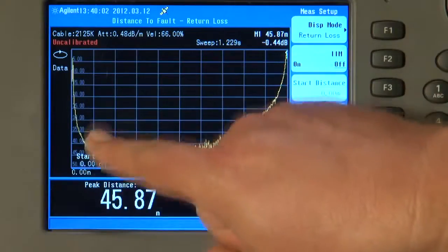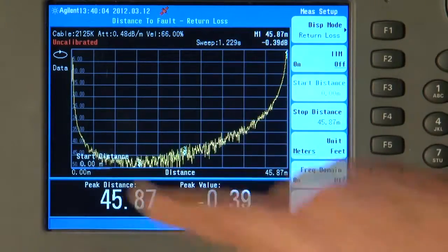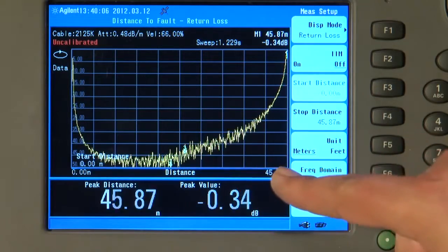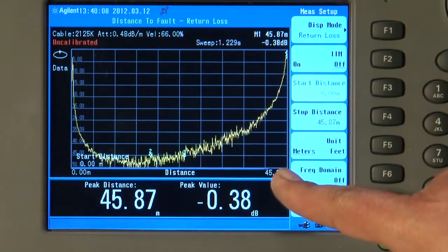The Y axis still shows return loss in dB, but the X axis now shows distance to fault in meters, or in feet if you prefer. We need to tell the instrument approximately how long the cable is. This will optimize the measurement and avoid unnecessarily testing beyond the end of the cable. If you are new to making distance to fault measurements and are not familiar with Fourier transforms, be aware that the frequency span you are sweeping directly influences the maximum distance you can measure and also how accurate you can resolve the distance to faults.